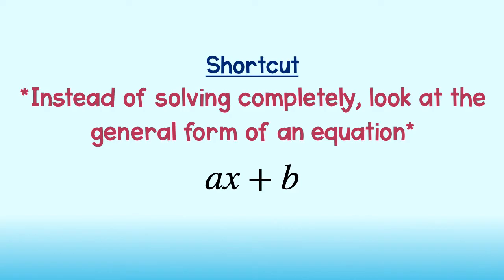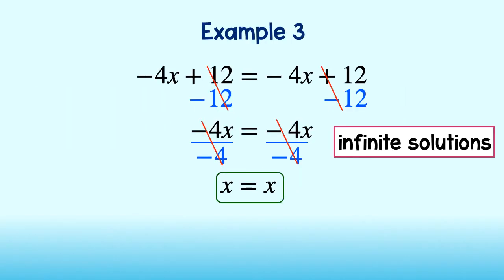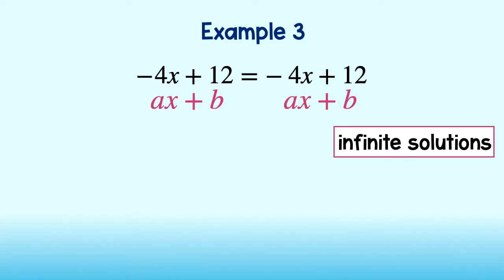So let's take a look at our previous examples. Go ahead and take a look at our last example, example 3. We see ax plus b on both sides of the equation, where a is the coefficient of x and b is the constant. What do you notice about the coefficients and constants on either side?